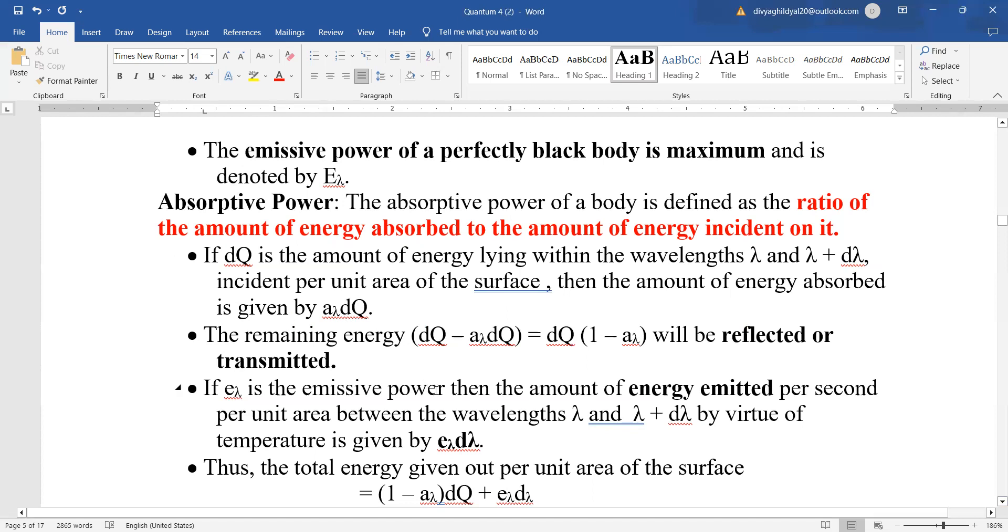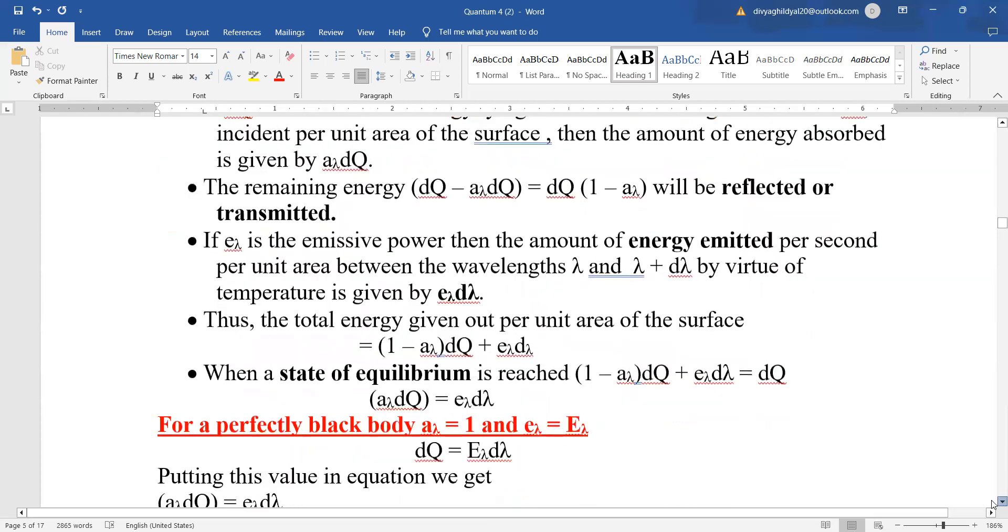If e_λ is the emissive power, then the amount of energy emitted per second per unit area between the wavelengths λ and λ + dλ will be given by e_λ dλ.